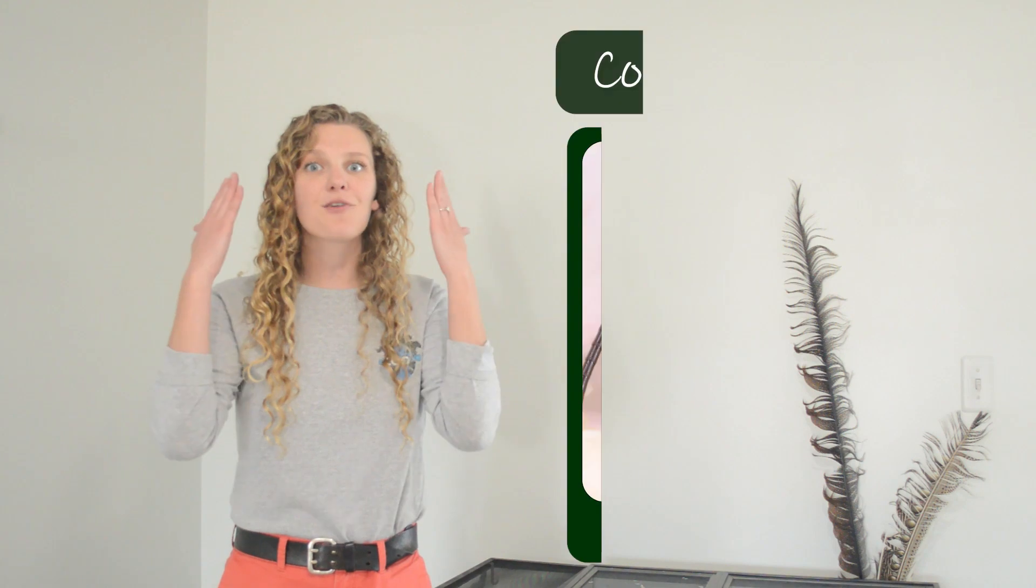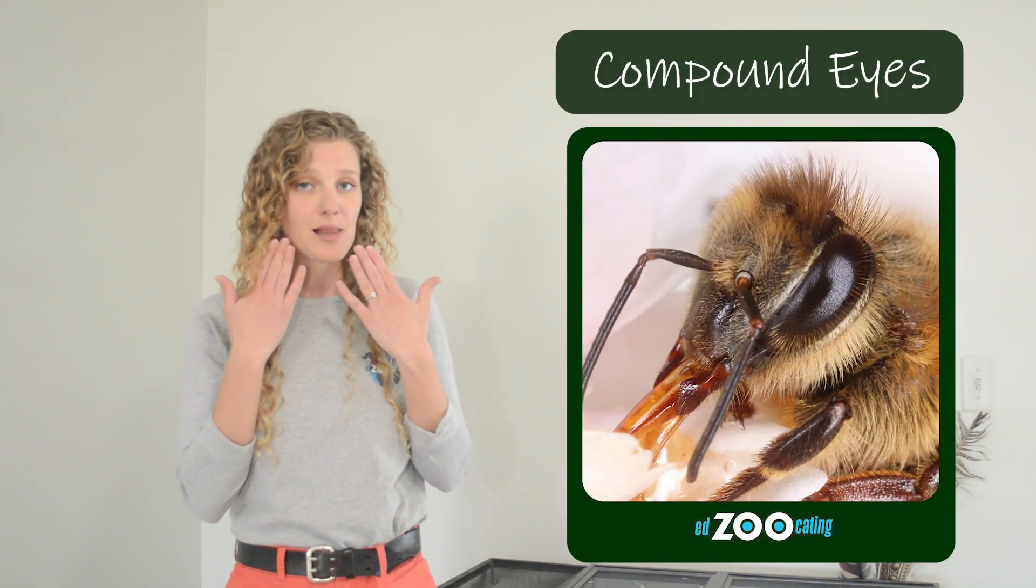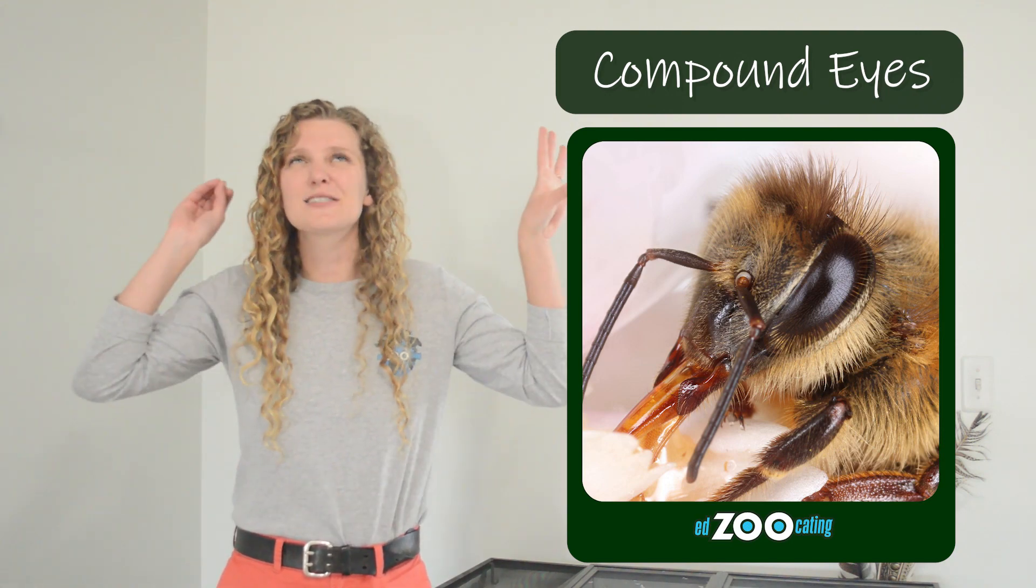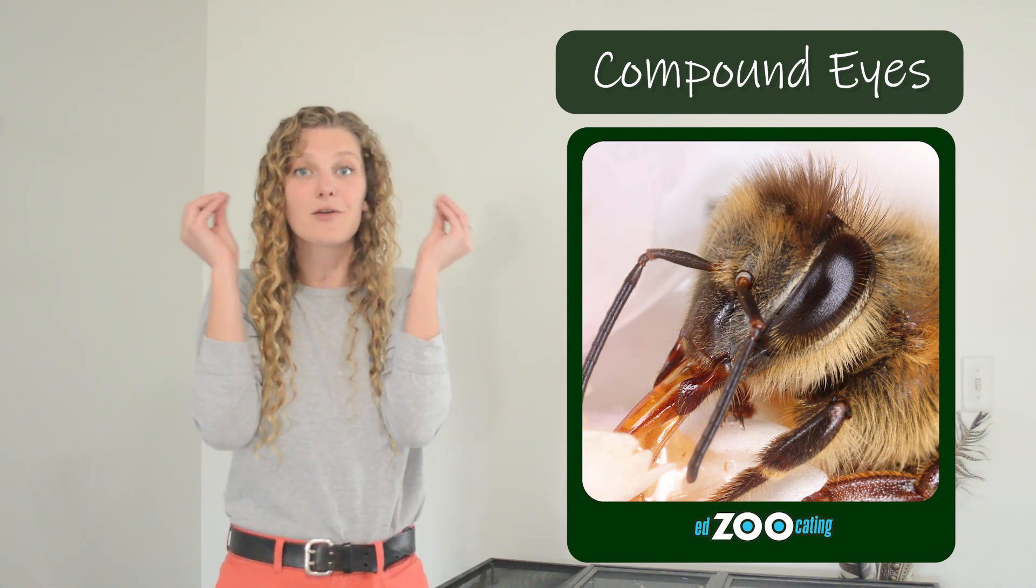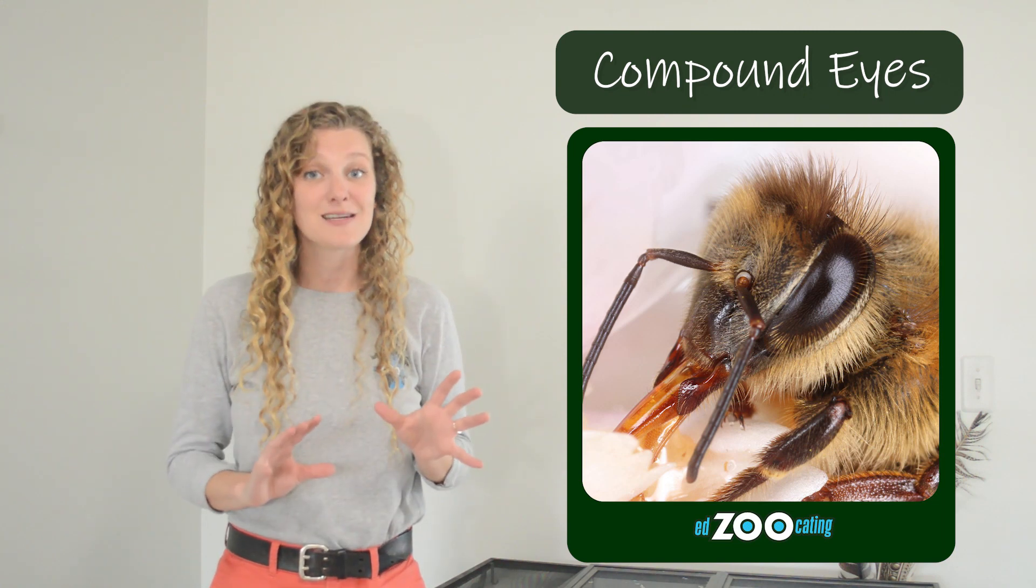That's not the only way that bees sense the world around them. Bees have compound eyes. Unlike our simple eyes which just take one picture, compound eyes are like they're taking thousands of tiny images and then putting them together in the tiny bee brain to figure out what's going on around them.